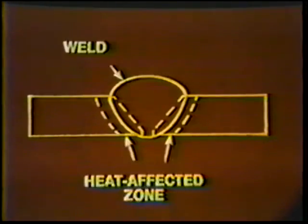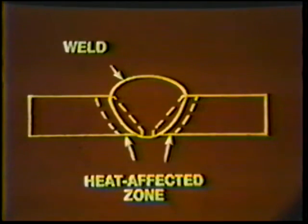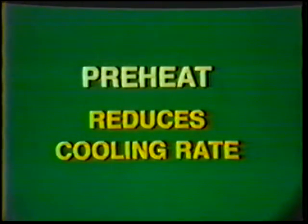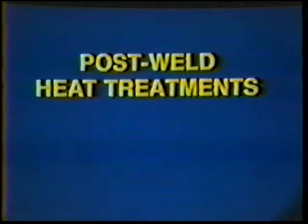Because of the rapid cooling associated with welding, the medium carbon steels tend to become brittle, both in the weld itself and in the heat affected zone. To reduce this effect, heat is sometimes applied to a workpiece before welding. This preheating is commonly used to reduce the cooling rate and minimize formation of brittle zones.